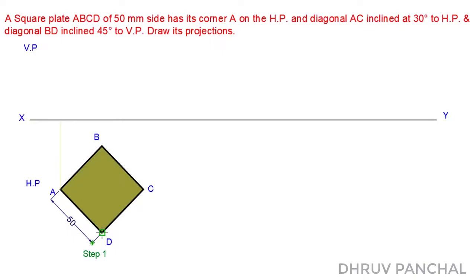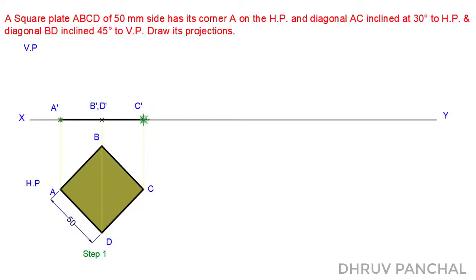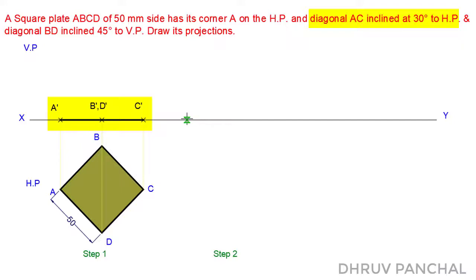To draw the front view of the square plate, with the help of a roller scale, take the projections of each point into the vertical plane and name the points as A dash, B dash, D dash, and C dash, and join them as shown. In Step 2, we will consider the plate's inclination with the horizontal plane. So we will draw the front view of Step 1 at an angle of 30 degrees in Step 2. Take any point on line XY and name it point A dash. With the help of a protractor from point A dash, draw a line at an angle of 30 degrees. Then, with the help of a compass, transfer the points from the front view of Step 1 to the front view of Step 2 as shown.